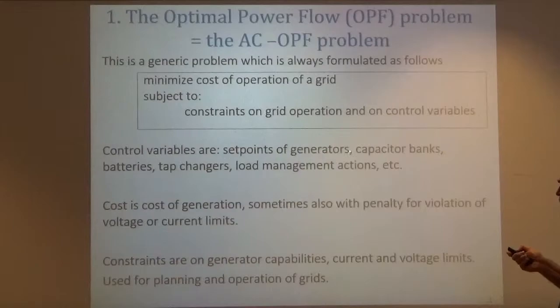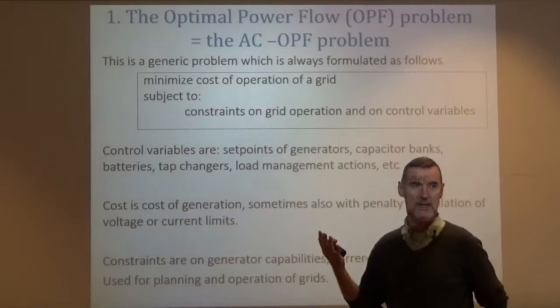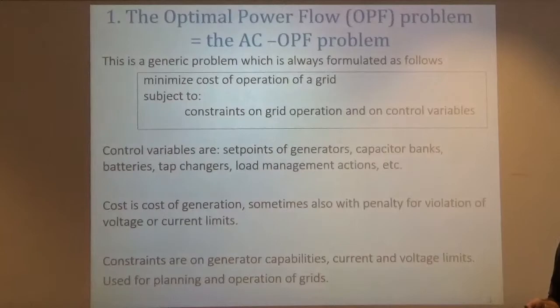What are the devices that control the grid? The first ones are the generators. The primary problem we have when running a grid is to balance consumption and production. So generation and loads should be balanced — that's the first thing we will want to do.